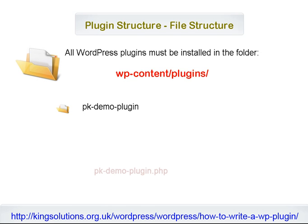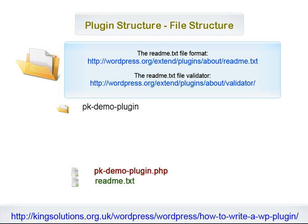The only file which must be in your plugin's directory is a PHP file which has the same name as the folder — your plugin name. Subfolders for all code, such as PHP, JavaScript, CSS, images, etc., should also be created within the main folder to keep related code. If you intend to distribute your plugin through WordPress, you will also need to include a readme text file.